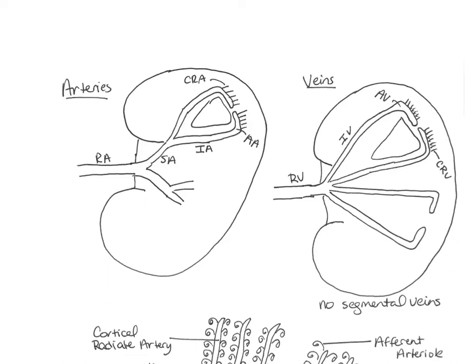Let's take a look at the blood supply to the kidneys. The kidneys receive blood from the renal artery. The kidneys receive 20% to 25% of the total cardiac output, so every time the heart beats, 25% of the blood pushed out of the left ventricle goes to the kidneys. That means about 1,200 milliliters of blood flows through the kidneys every minute. The renal artery enters the kidneys at the hilum.